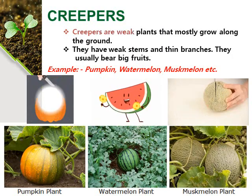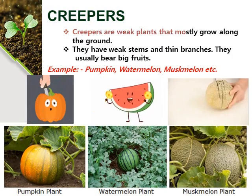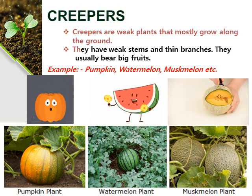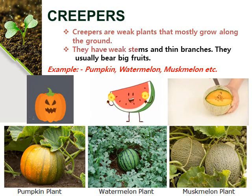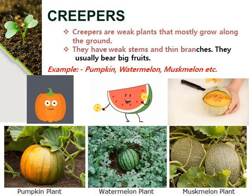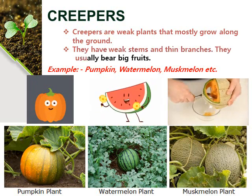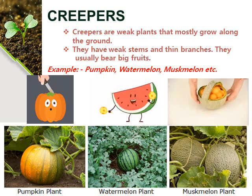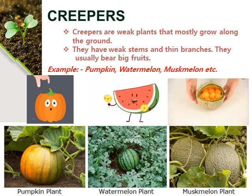Creepers: Some plants have weak stems and grow along the ground. They are called creepers. For example, watermelon and strawberry.